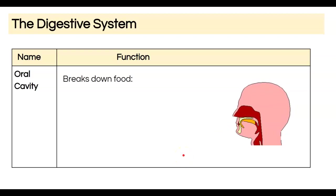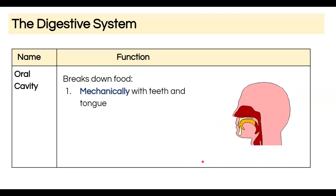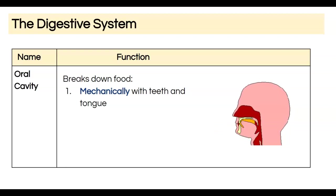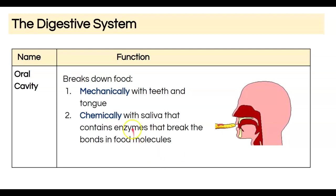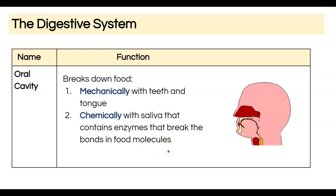The role of the oral cavity is to initially break down food, and it's broken down in a couple of ways. Mechanically, we have our teeth that rip apart or grind food, and our tongue rolls food into a compact ball before we swallow. But we also have enzymes — special chemicals in our saliva — that chemically break down food as well.